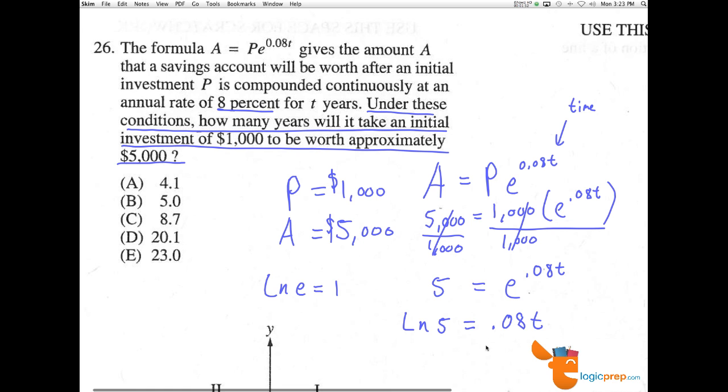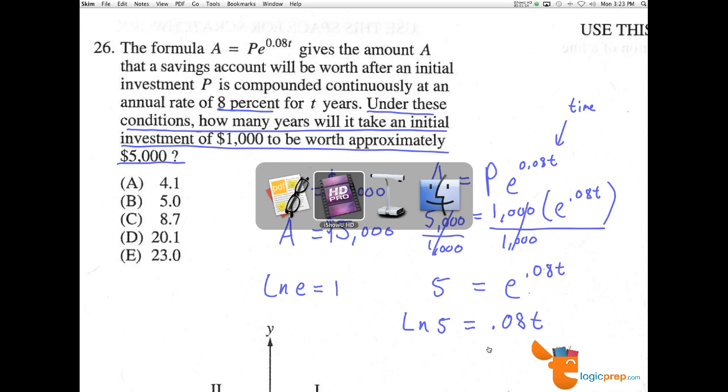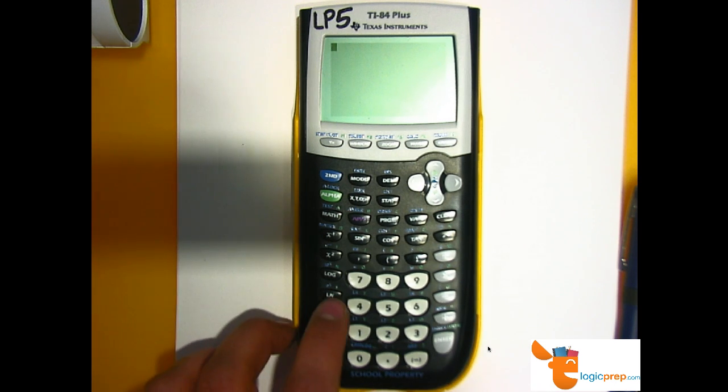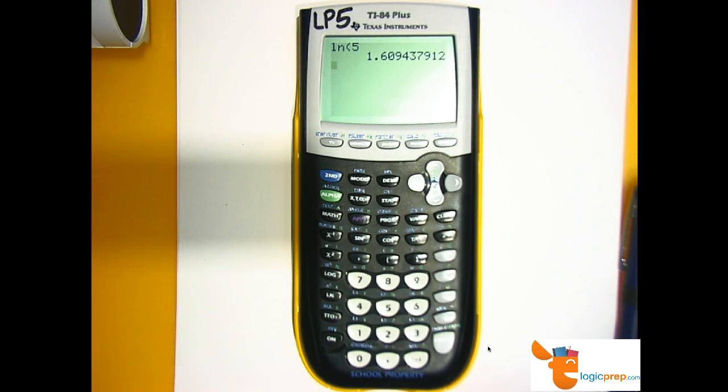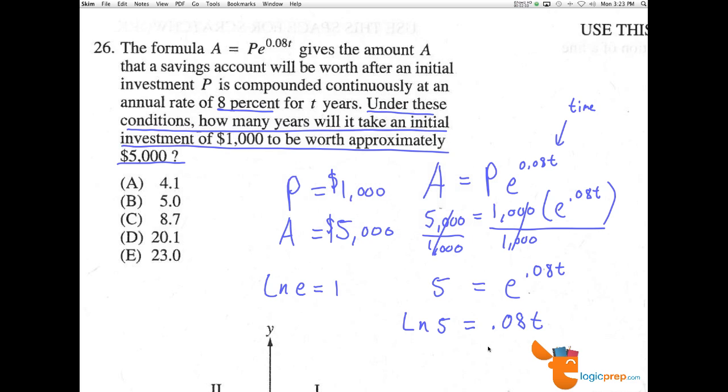Now we're going to plug into our calculators the natural log of 5. Here, LN5, and we get 1.6094. Now, if we go back to our problem here, 1.609 is good enough, equals 0.08T.